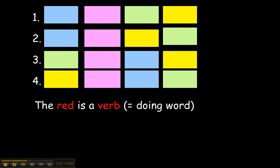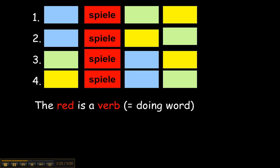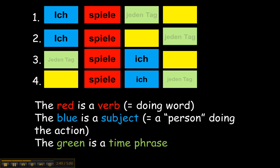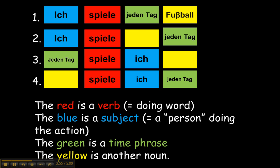Just remember: the red is going to be our verb, normally the second element in statements. A verb is the doing word — it tells the action taking place in the sentence. The blue is the subject and will always be next to the verb, whether on the left or right side, depending on what you're trying to say. The green could be a time phrase, and the yellow could be another noun. For example, "Ich spiele jeden Tag Fußball," or "Ich spiele Fußball jeden Tag," depending on what you want to emphasize. "Jeden Tag spiele ich Fußball," oder, "Fußball spiele ich jeden Tag." So you can see, German word order is pretty flexible, but when you're making statements, the verb will always be the second thing.